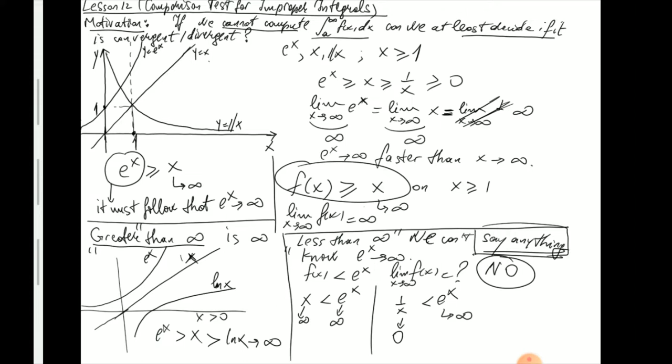From now on, when we talk about comparison tests — and we'll revisit this in the context of series — go back to the definition and make sure you use it in the precise way it is stated. If the inequality is in the wrong order, the test cannot be applied. Always use your intuition as a fail-safe: it should feel natural that something greater than a quantity going to infinity must itself go to infinity, and that something less than infinity could be many things.